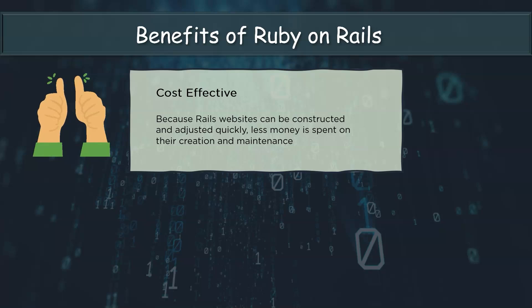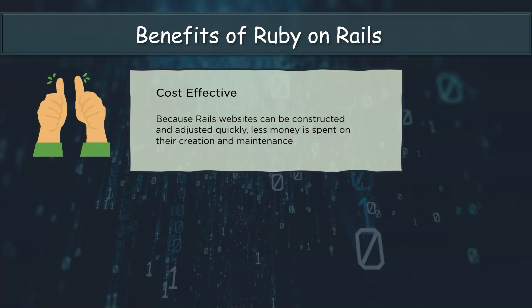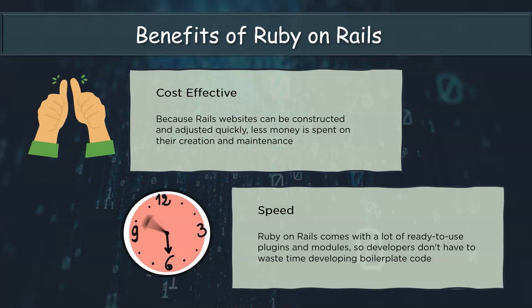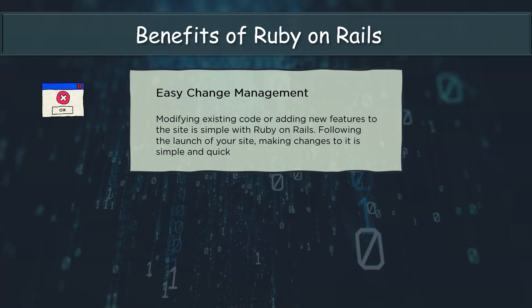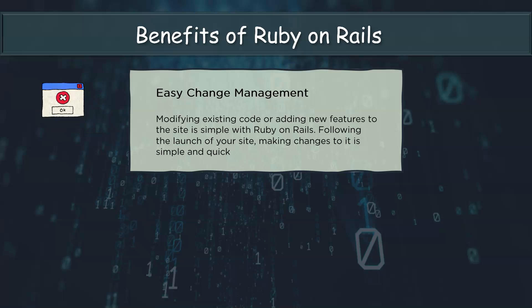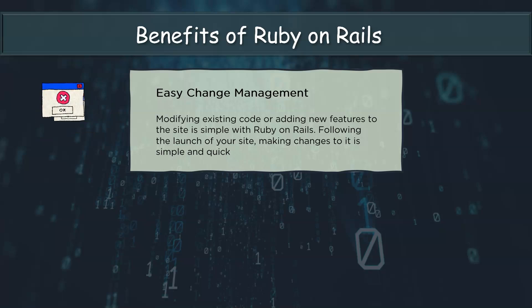First up is cost effective. Ruby on Rails is an open source framework that is completely free. It is simple to use from the developer's perspective and with the added advantage of tons of gems, the developer may save a lot of time and work. Next up is speed — Ruby on Rails comes with many ready-to-use plugins and modules, so developers don't have to waste time developing boilerplate code. Talking about easy change management, with Ruby on Rails altering existing code or adding new features to the site is trivial, and making updates after the site has been launched is straightforward and quick.